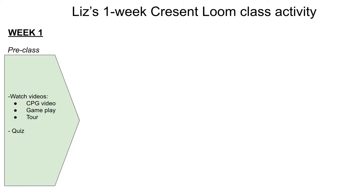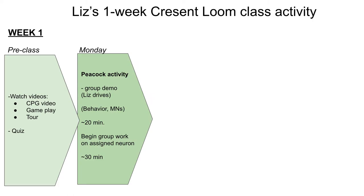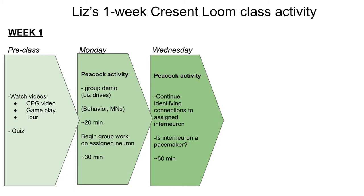I'll quickly explain the sequence of events. Before coming to class for the week, my students prepared by reading, watching videos, and taking a quiz. They watched videos I developed about CPGs and about Crescent Loom. In our first class meeting, we used the Peacock creature. I drove Peacock and demonstrated how to operate Crescent Loom briefly, starting with the behavior and assessing what was happening with the motor neurons. Then students joined small groups to begin work on an assigned interneuron. They were assigned a specific interneuron and asked to identify all the connections between that interneuron and other neurons, as well as assess whether it was a pacemaker or not.